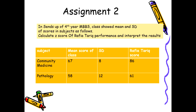This is Assignment 2. In the send-up of fourth year MBBS class, the class showed the following mean and standard deviation: the mean score in community medicine was 67 with SD ±8, and the mean score in pathology was 58 with SD 12. Calculate the Z-score of Rafia Tarek's performance — she scored 86 in community medicine and 61 in pathology — and interpret the results.